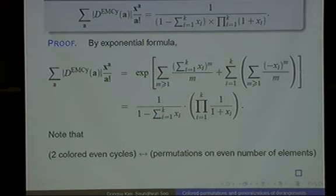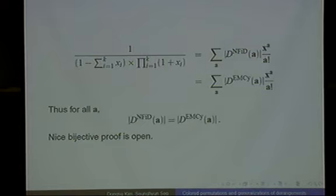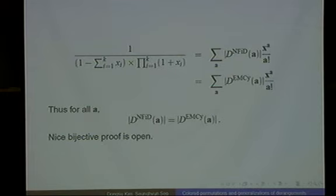Here, no fixed point in descending order and no evenly monochromatic cycle have elements with the same generating function. Clearly these two sets have the same cardinality. But as before, we cannot find a nice bijection easily. If we found the bijection between NFIA and no-monochromatic-cycle, we made that. You might find the solution for this case too.